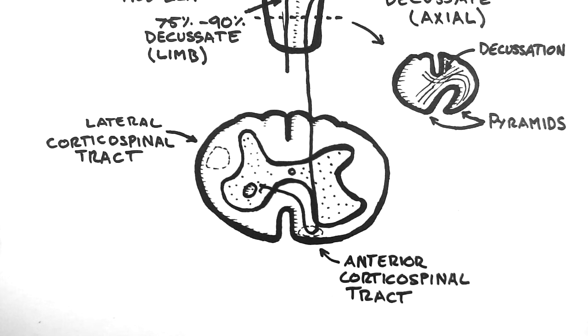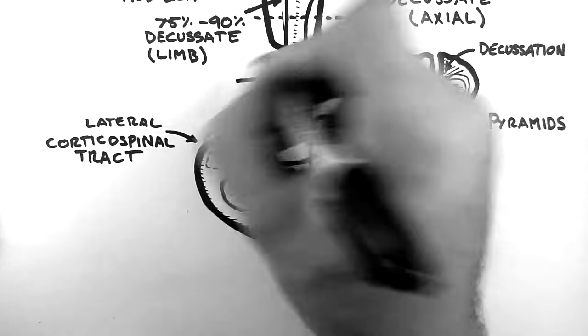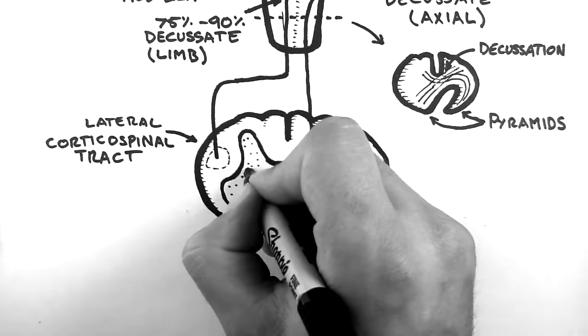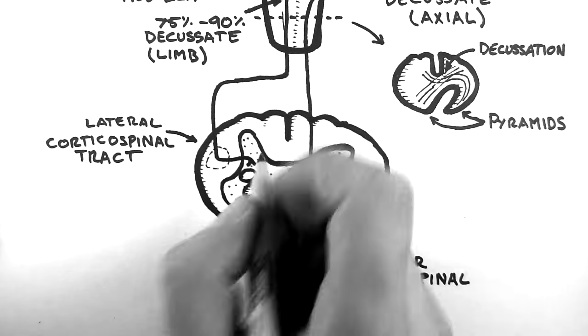Conversely, the fibres of the lateral corticospinal tract have already decussated at the level of the pyramids. As such, when they get to the appropriate level, they just synapse onto a neuron in the anterior horn.